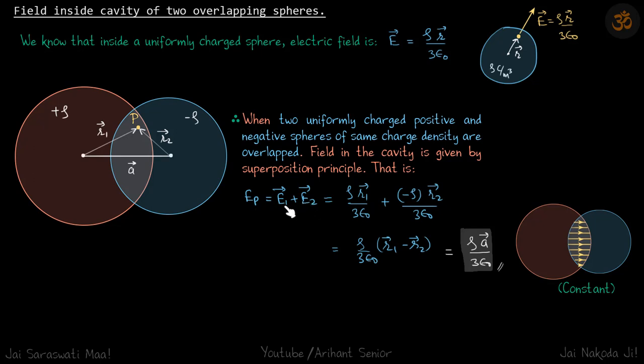E1 vector will be rho r1 vector by three epsilon. E2 vector will be minus rho r2 vector by three epsilon. If you take rho by three epsilon common, you will get rho times r1 minus r2 vector.